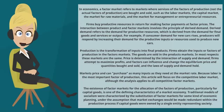Firms buy productive resources in return for making factor payments at factor prices. The interaction between product and factor markets involves the principle of derived demand. Derived demand refers to the demand for productive resources, which is derived from the demand for final goods and services or output.